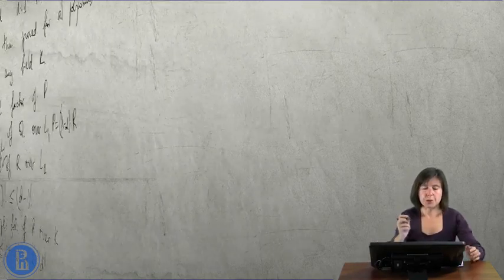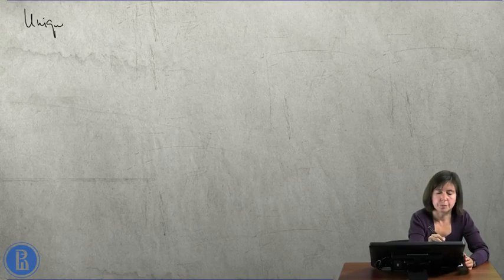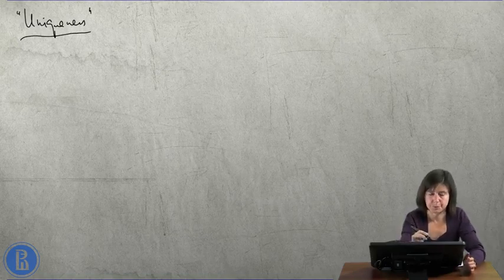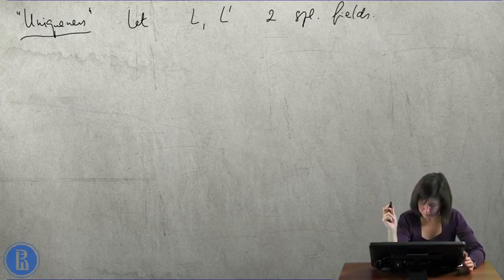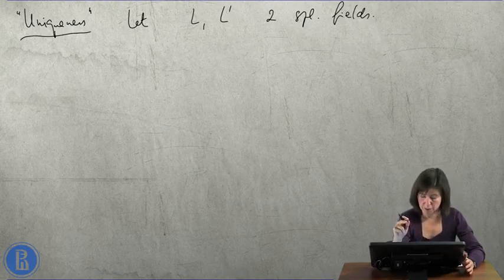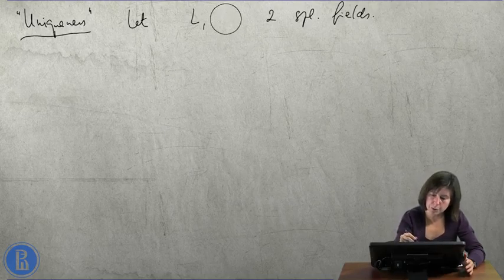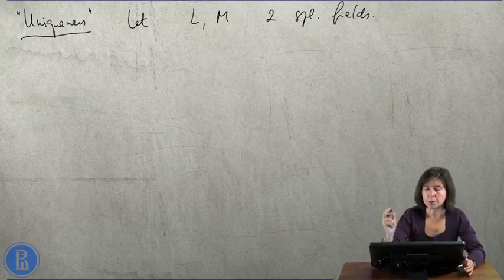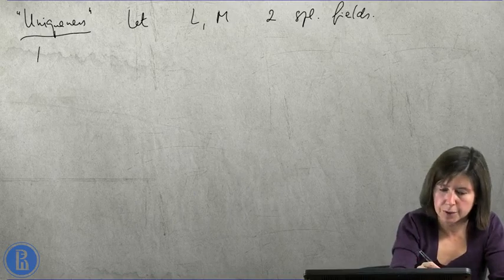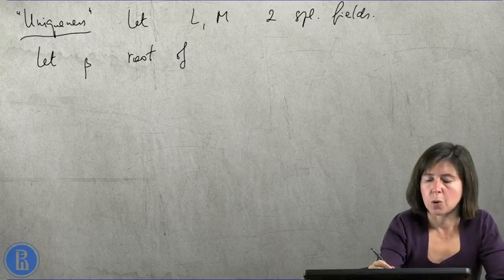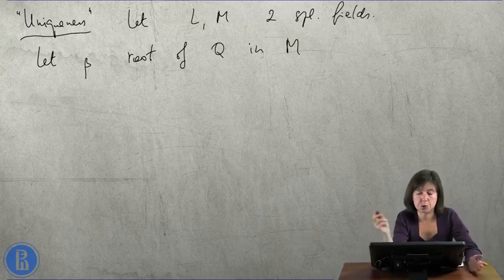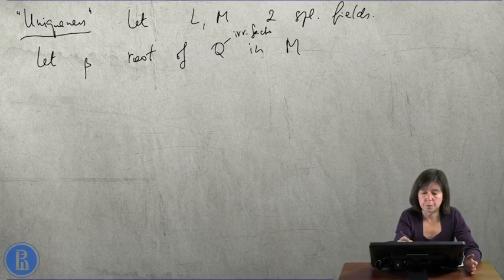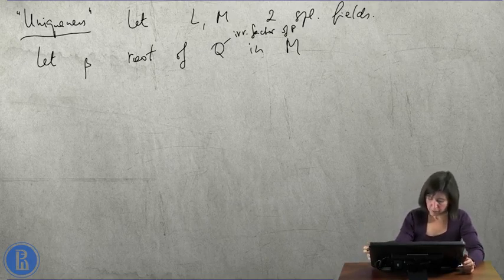Now, it remains to prove uniqueness. Uniqueness up to isomorphism. Let L and M be two splitting fields. Or maybe let me call it M the other one because I already have L1 and this might be confusing. L and M are two splitting fields. Now, let beta be a root of q in M. Well, q was some irreducible factor of p.